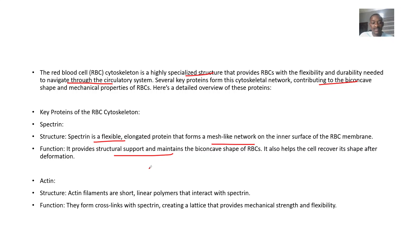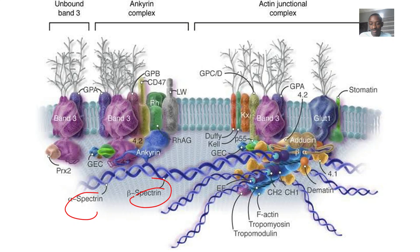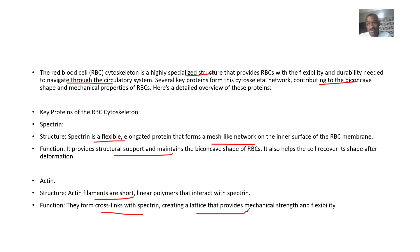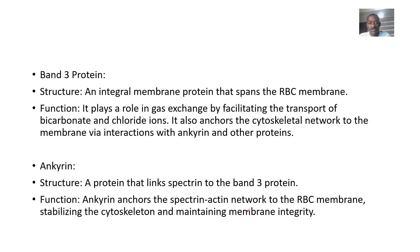Now about actin. Actin filaments are short — just very short linear polymers that interact with spectrin. Their function is to form cross-links with spectrin and create a lattice that provides mechanical support and flexibility.